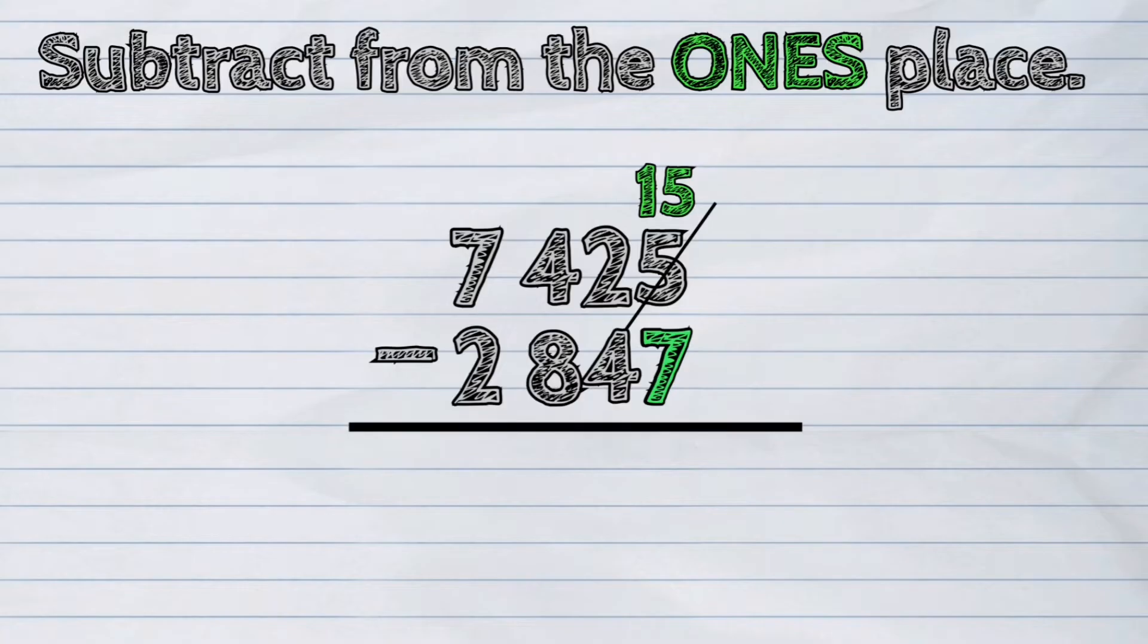Digit two in the tens place will now become one. Let us next subtract seven ones from fifteen ones. Fifteen minus seven is eight.